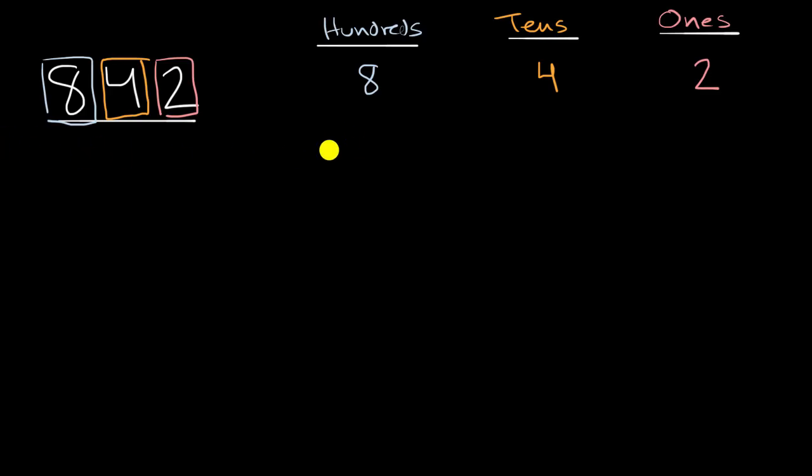you could view it as 800 plus four tens is the same thing as 40, plus two ones is the same thing as two. So these are different ways of representing the same number.